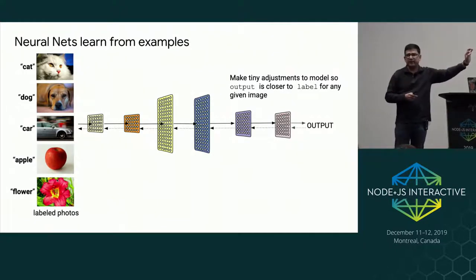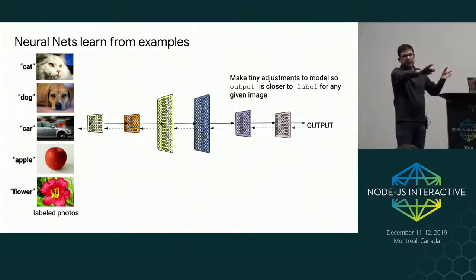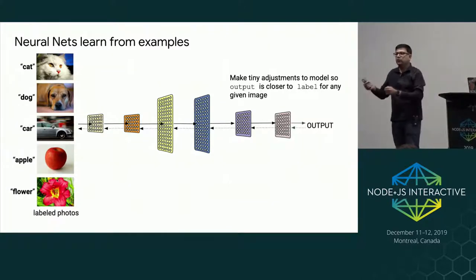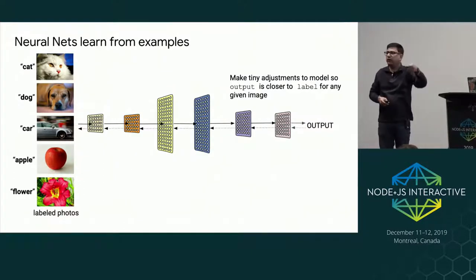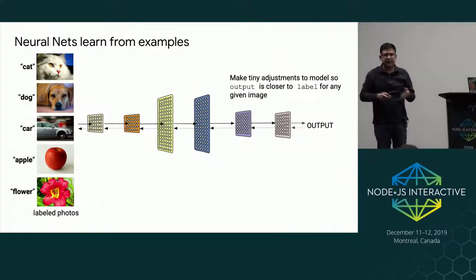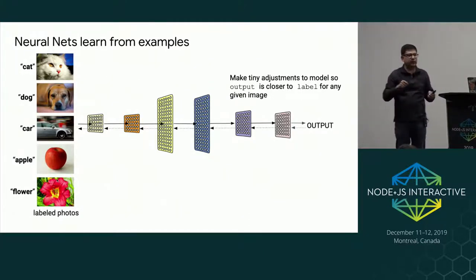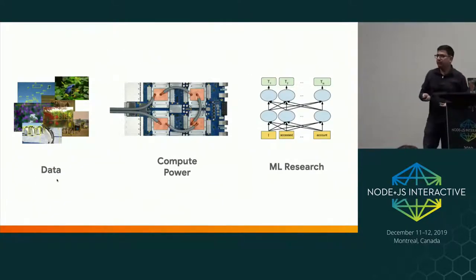Each layer and each element in that layer is just doing a very simple math operation — taking in some numbers, multiplying them with some other numbers, and producing a new output. You wire this model so that when an image is fed in, it produces an output close to what we expect. If you feed in an image of a cat and it's not classified as cat, we calculate an error, propagate it back through the model, and adjust all the parameters until we get the right answer. We keep doing this for lots of examples and then we have a trained model.